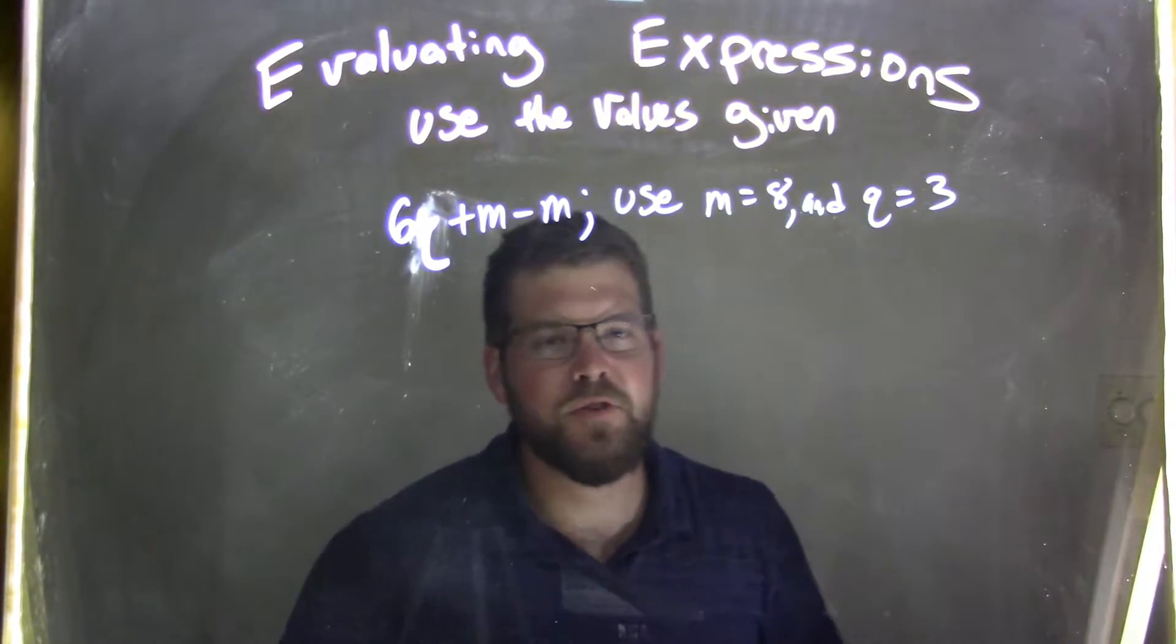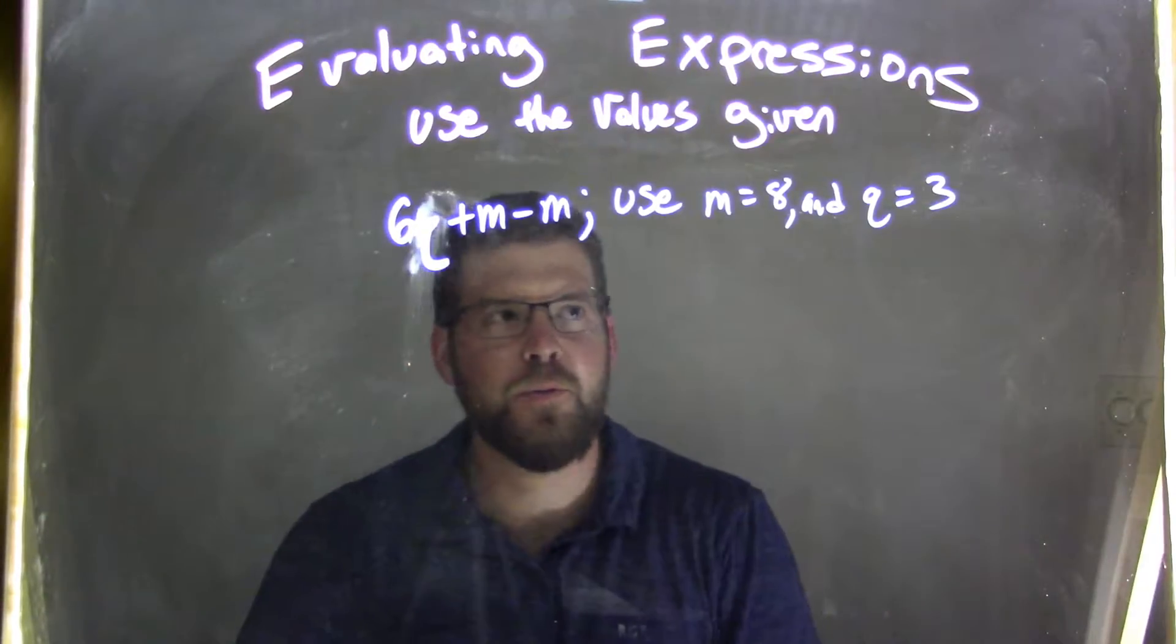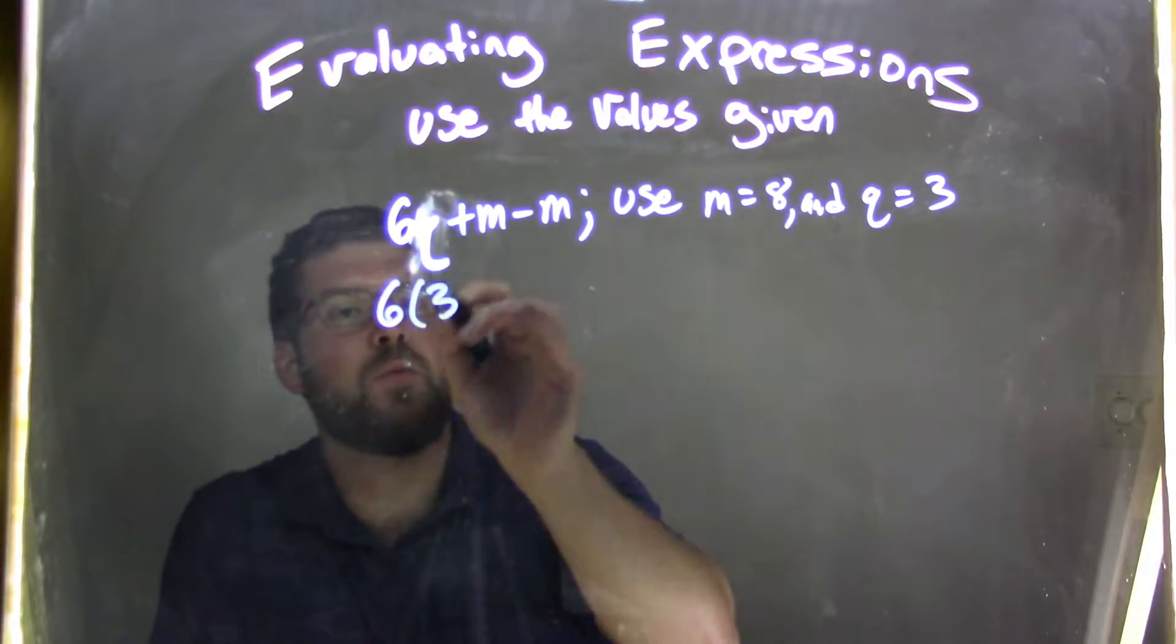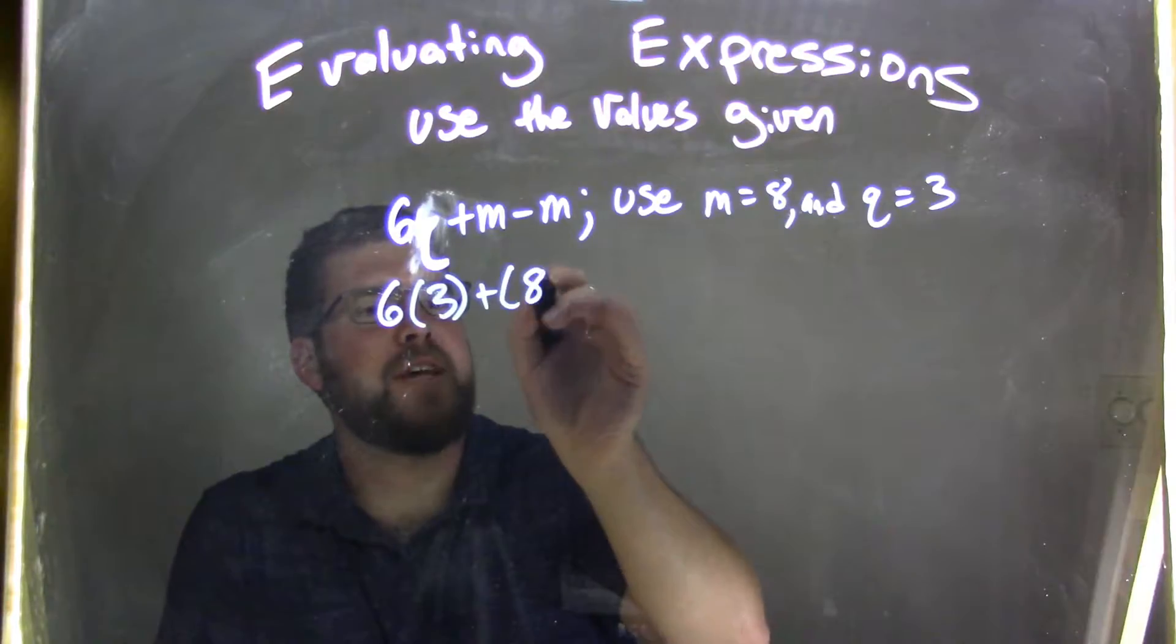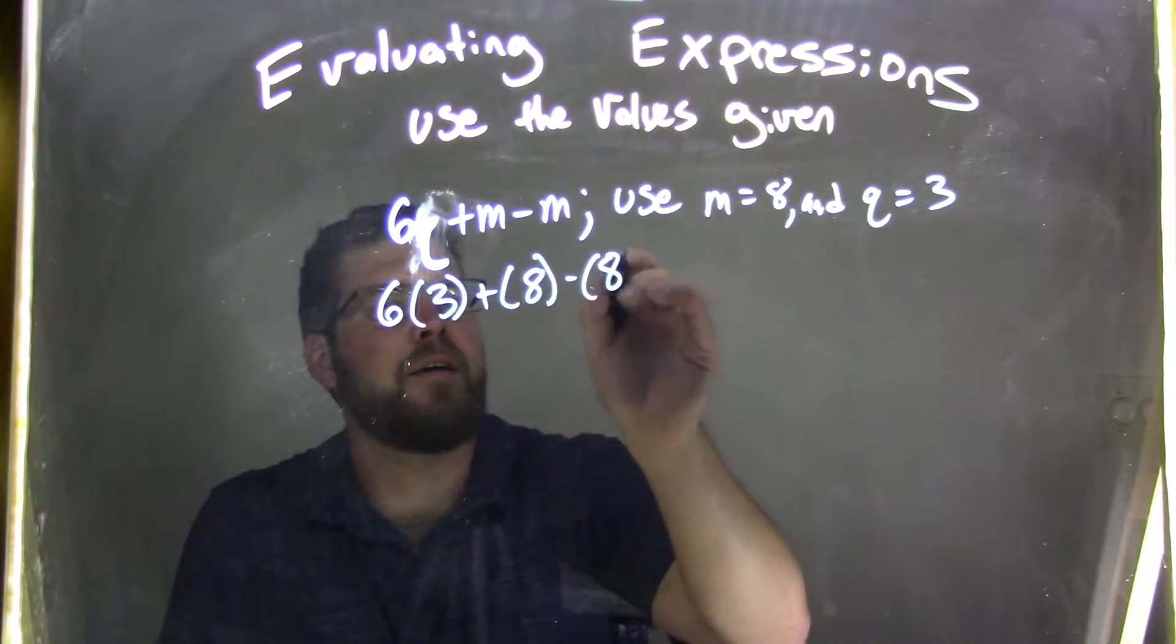So we want to first substitute in our m's and our q's. 6 times q, which is 3, plus m, which is 8, minus 8.